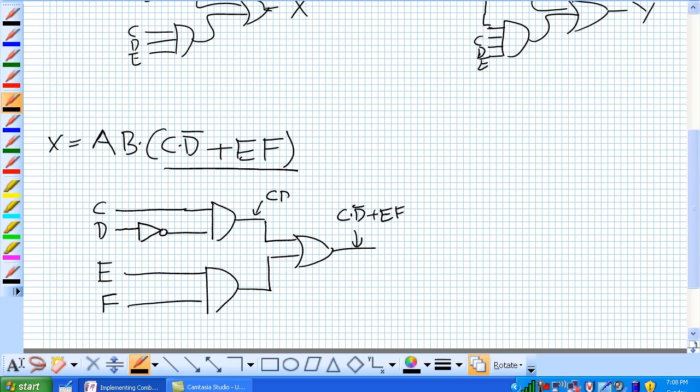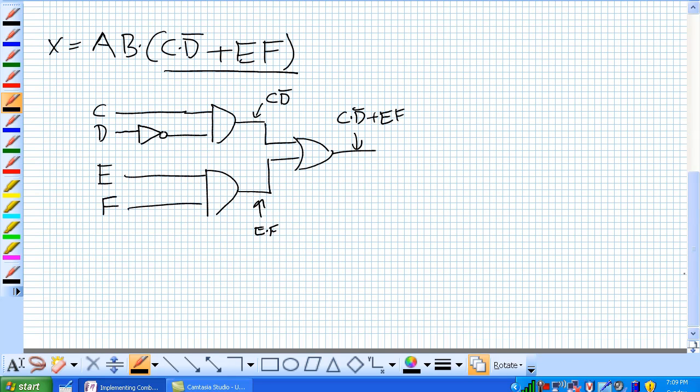And then going back here, this is C and not D, E and F. Now that's going to be fed into a three-input AND gate, where that's A and that's B, because it's A and B and C and not D or E and F.